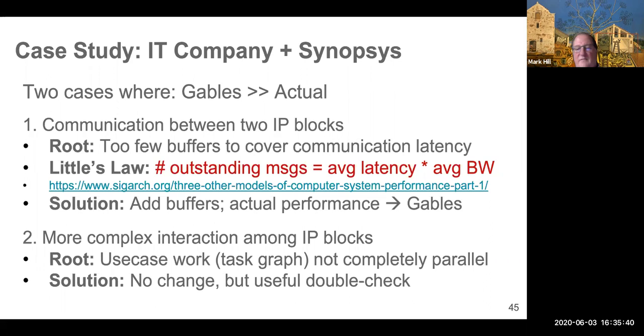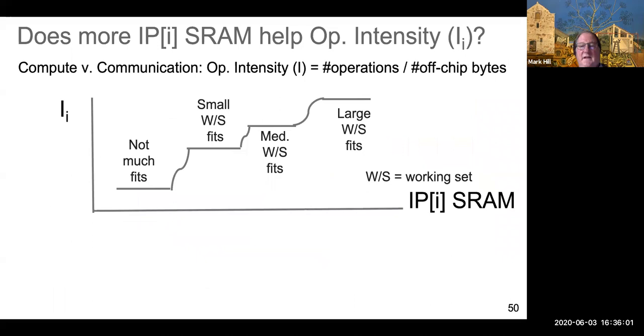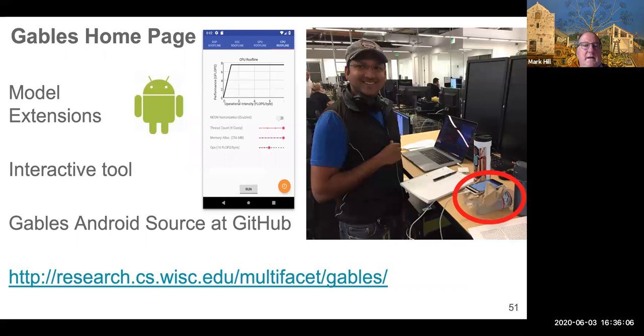The second example where Gables predicted a number much higher than the simulation, the root cause ended up being that the use case, the task graph was not completely parallel, like Gables assumes. So in this case, there was no simple fix, but it shed light on the fact that there wasn't enough parallelism and maybe there was a change that you could get to it, or else you had to accept that there was a difference. But I still think the double check is useful. I'm going to not skip allocating SRAM. This can help with allocating SRAM.